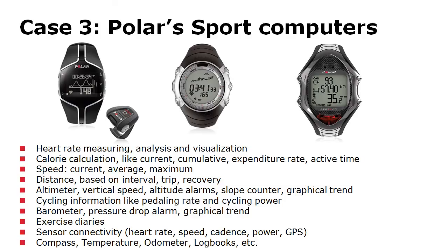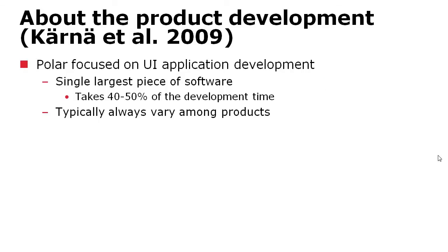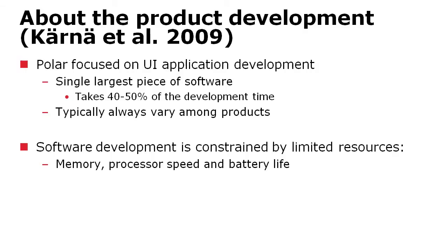The third case deals with sports computers. Polar makes different kinds of sports computers with various built-in functionalities. The domain here is the user interface — the different functionality visible on the device screens. This code takes about half the time to develop of the whole product. It is the single largest piece of code, takes the most time, and varies from product to product. This case also put very strict requirements on the generated code to be optimal for memory and processor speed.